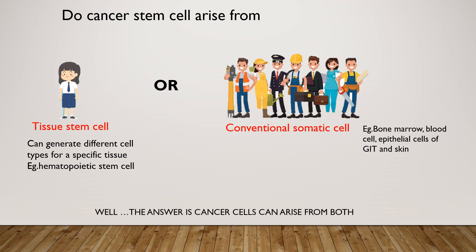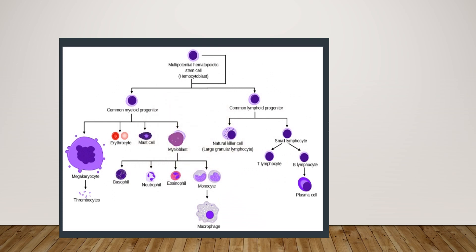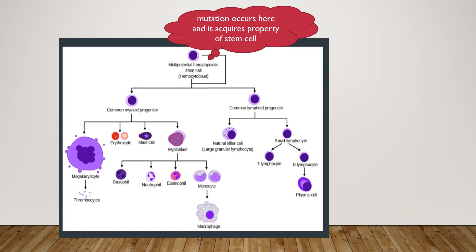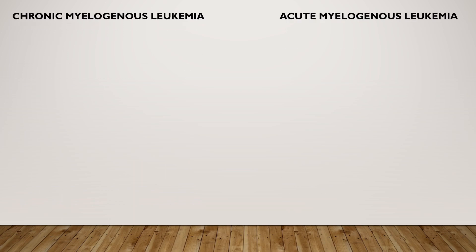Cancer stem cells can arise from both tissue stem cells and conventional somatic cells. For example, when a mutation occurs at the hematopoietic stem cell, it leads to chronic myeloid leukemia, whereas when mutation occurs in the myeloblast, it leads to acute myeloid leukemia. So we have two types of leukemia: chronic myelogenous leukemia and acute myelogenous leukemia.